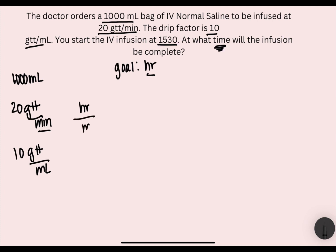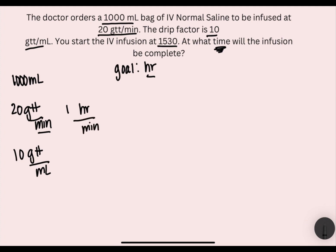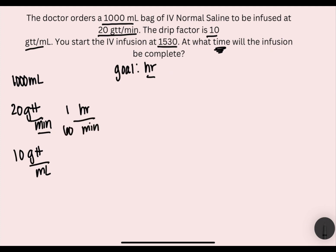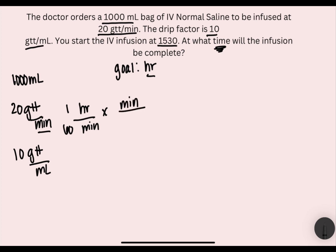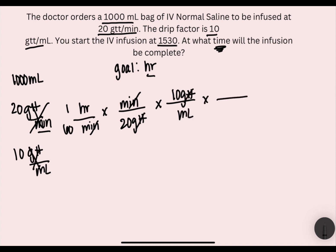We can still put our hours. So let's do one hour is 60 minutes. Now we've got minutes at the bottom — we'll need minutes at the top so we can cross out. So 20 drops will go on the bottom, minutes on the top — cross out. Now we've got drops at the bottom; we need drops at the top. So that's your 10 drops per mL — drops cross out. Now we have milliliters left.